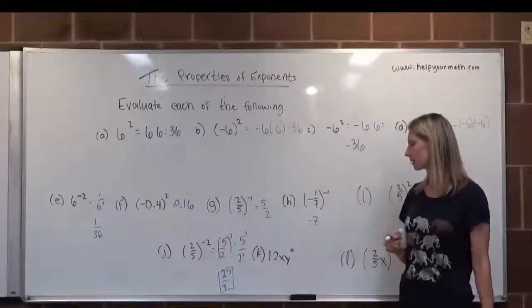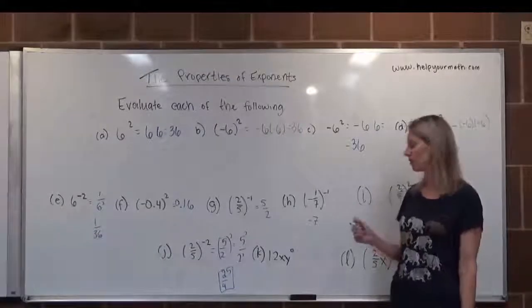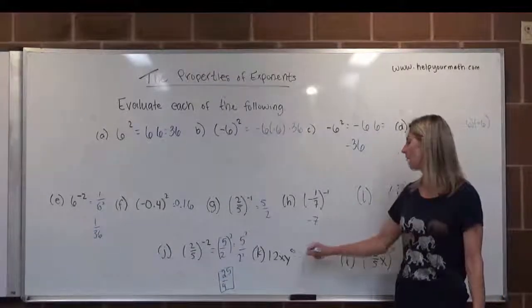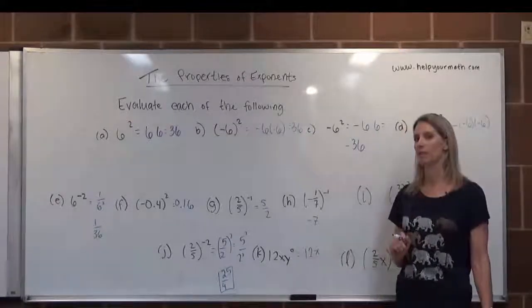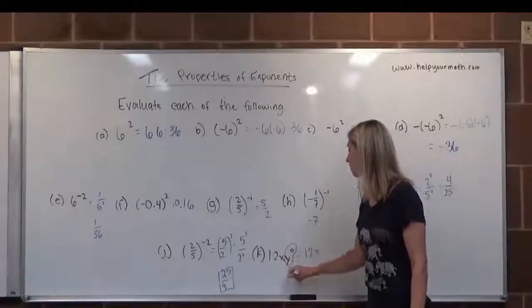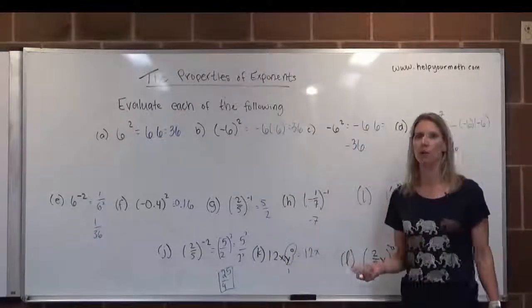In letter K, we have 12xy to the 0. And the answer here is 12x. That 0, the base of the 0 is y and y alone. So this would become a 1, and it would be 12x times 1, which is 12x.